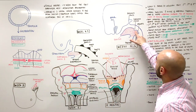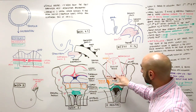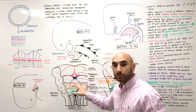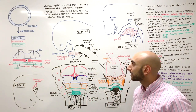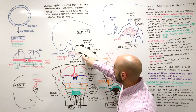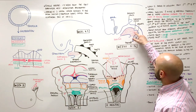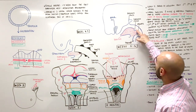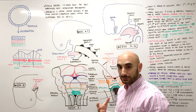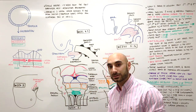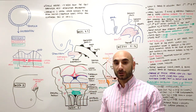The foramen cecum sits between the body and the root of the tongue, and this is where the thyroid will descend from. We can see the thyroid diverticulum coming from the foramen cecum, and it will eventually migrate all the way down in front of the first two tracheal rings. My next video will be on the embryology of the thyroid.